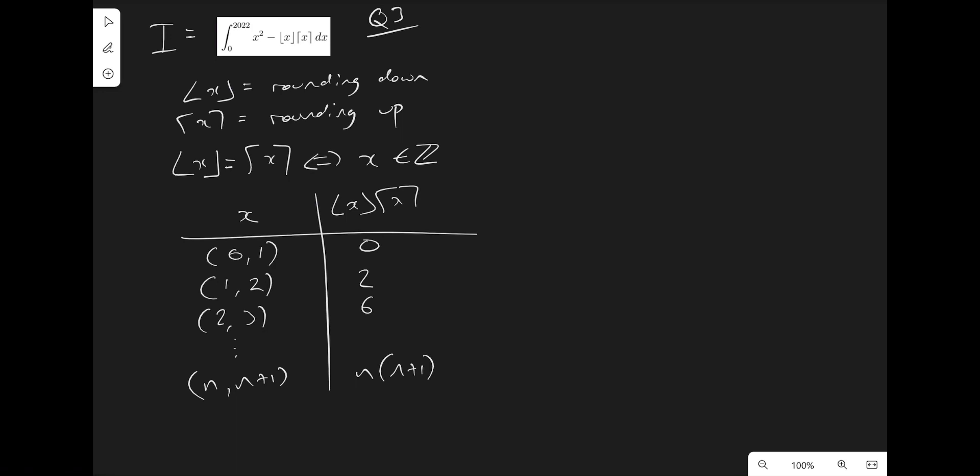So we can consider an integral just over this region. So we're going to consider what I'll call i dash, and we'll equal that to the integral from n to n plus 1. And our integrand is going to be the same as the original in the question. So we have x squared minus the floor multiplied by the ceiling, all with respect to x.